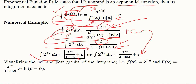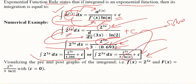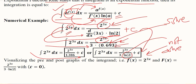We have written it in two ways: one where we retain the natural log instead of solving it, and one where we have solved it. So these are the two ways of writing the same result.